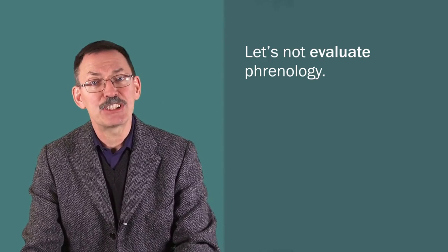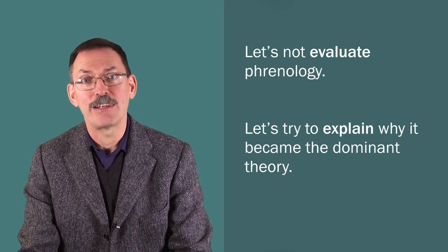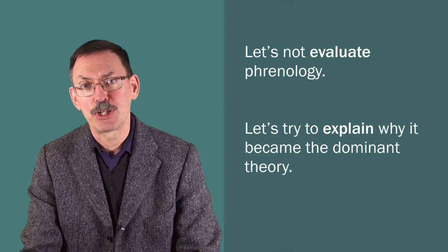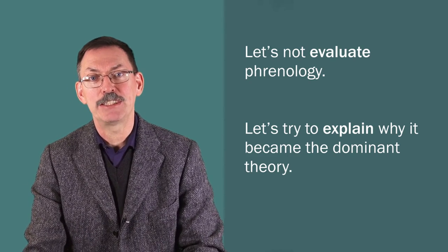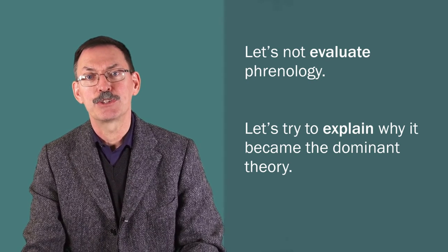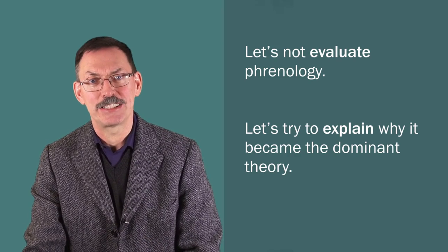So Shapin says, let's not evaluate phrenology. Let's try to explain why it became the dominant theory. So this is a methodological relativism. It's a relativism which says, in order to understand how science works, you had best not try to evaluate it at the same time. Of course, you can have your evaluations, but don't keep your evaluations away from trying to explain why scientific theories become accepted.